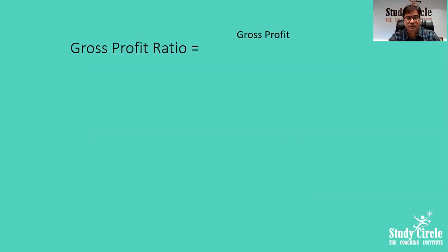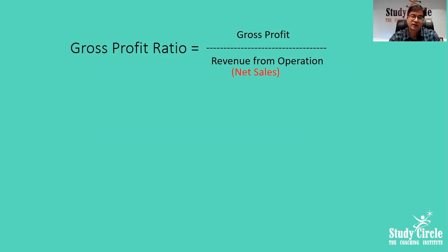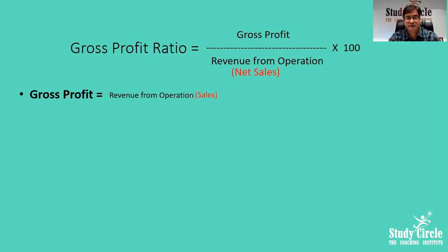The first is gross profit ratio. Gross profit ratio is gross profit divided by revenue from operations — that is net sales — into 100. Revenue from operations is always net; if returns are given, we subtract them to get net sales. The formula is: revenue from operations, that is sales, minus cost of goods sold (COGS) gives gross profit.